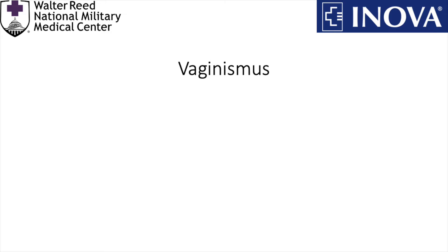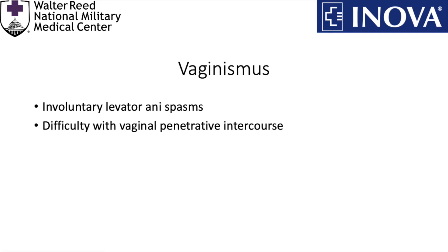Vaginismus is characterized by involuntary levator ani spasms that can make vaginal penetrative intercourse painful or not achievable. The exact etiology remains largely unknown, but can be related to anticipation of pain,